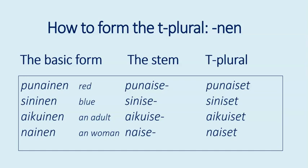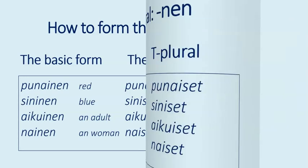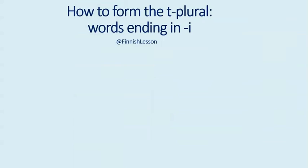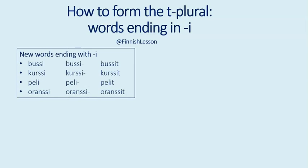One word type with several subcategories are words ending with the letter I. For new words ending with the letter I, it's really easy to form the T-plural because you simply add T at the end of the word. For example: bussi, bussit; kurssi, kurssit; peli, pelit; oranssi, oranssit. This group is growing because there are and will be new words entering the Finnish language.